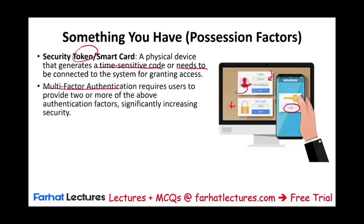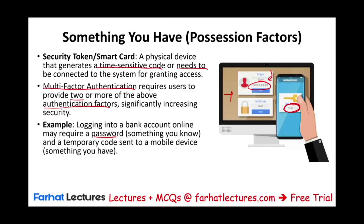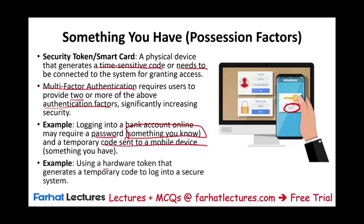This is called multi-factor authentication — you are looking for more than one thing. A password is good, but passwords can be guessed, so you need a password plus something else: sending a message to your cell phone or having a security token. Sometimes you might have a smart card to input into the system. Multi-factor authentication, or MFA, requires the user to provide two or more authentication factors, increasing security. For example, logging into a bank account online may require a password — something you know — and a temporary code sent to your mobile device. Even if you lose your password, no one can log in unless they also have your cell phone.